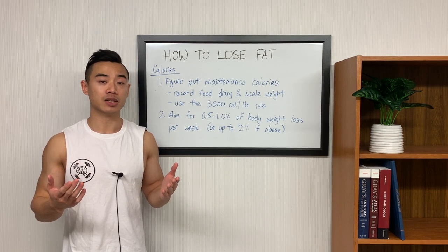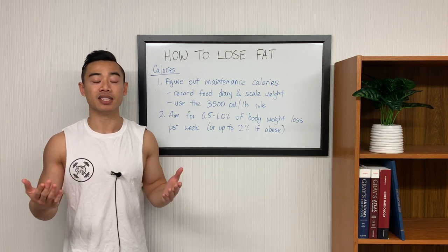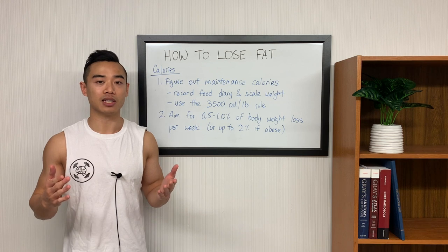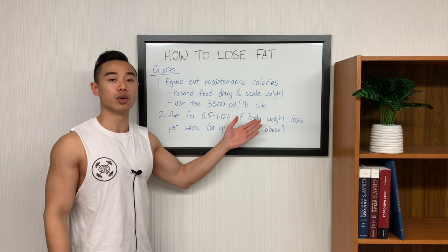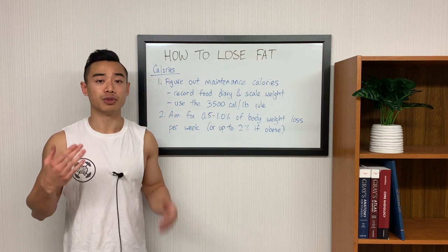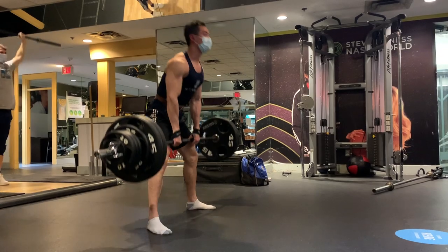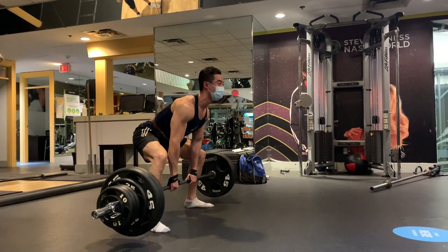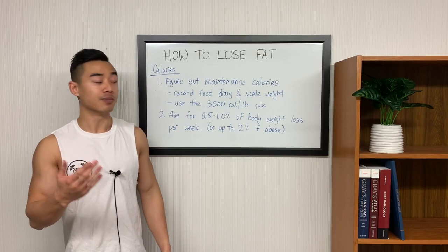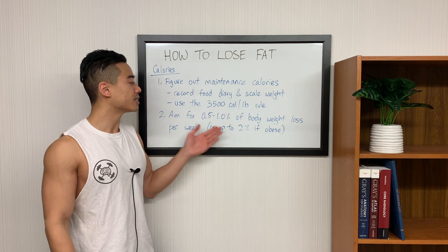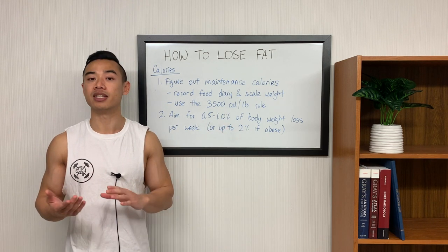After we figure out our maintenance calories, we're going to want to subtract calories to create a calorie deficit. The easiest way to do this is to aim for a rate of scale weight loss. I would recommend that you aim for 0.5 to 1% of your body weight lost per week. So if you weigh 200 pounds, I would recommend losing weight at about one to two pounds per week. You mainly don't want to be losing weight too quickly because you don't want to jeopardize your gym training and possibly risk losing muscle. However, the caveat here is that if you are obese, you can lose up to 2% of your body weight per week and still maintain or even continue to build muscle.